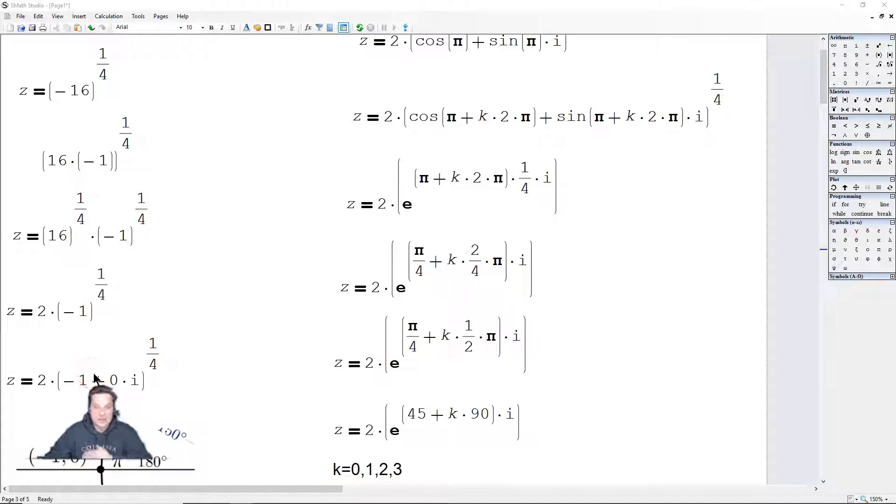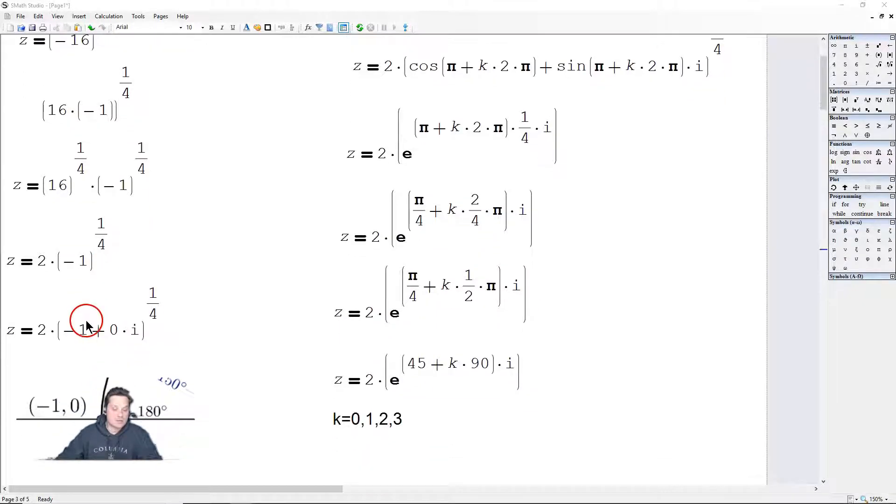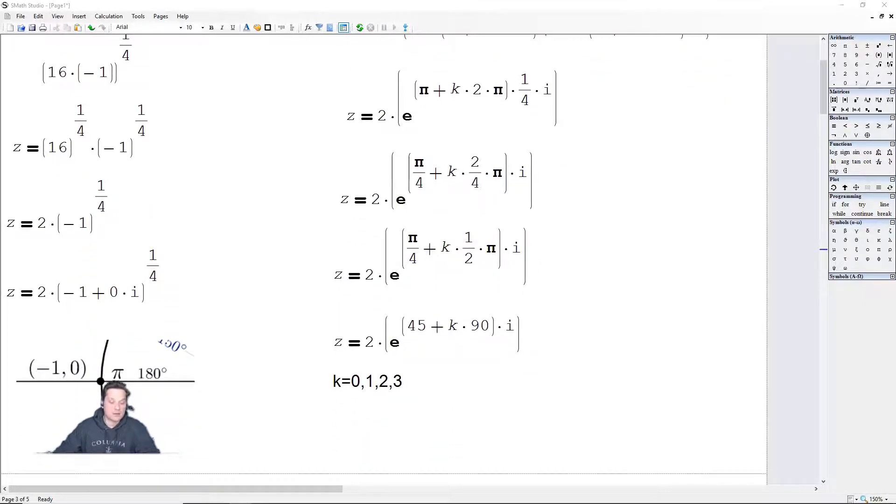Here's a key observation to making the rest of it work, which is that this negative 1, you get from doing the cosine of some angle, and that 0 you also get from doing the sine of some angle. So here in this picture, pi radians or 180 degrees, either one is fine.